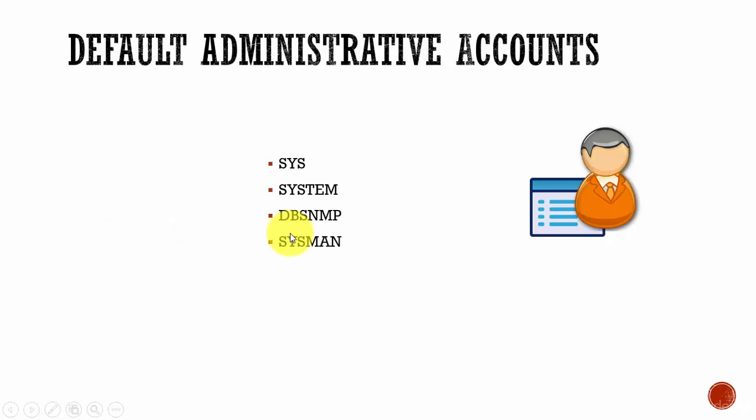Now let's learn about the default administrative accounts created as part of Oracle installation. The first one is SYS — this is a very important account used by the DBA. You can think of it as the master of all users. It has all privileges, the DBA role, all privileges with admin option. This user can perform startup and shutdown of the database, backup and recovery, database upgrades, and owns the data dictionary for the entire Oracle database.